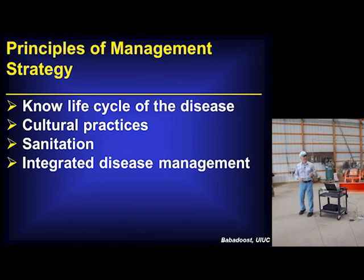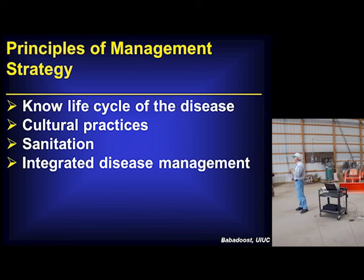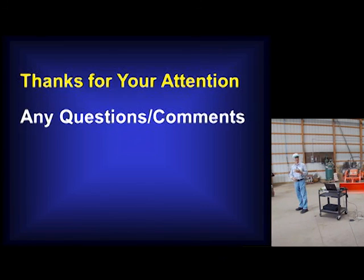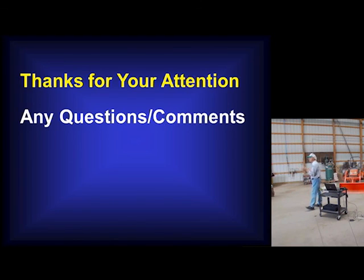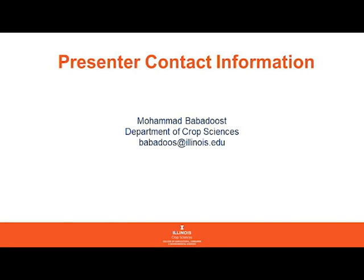With this, I'll bring it to the end. All I can say: if you want to be successful, know your disease cycle. Without knowing your disease cycle, you cannot achieve much success with integrated disease management. We do not rely on just one method. You're welcome to ask me questions about apple diseases or vegetable diseases — about tomatoes, basil, or whatever you want. Thank you so much.